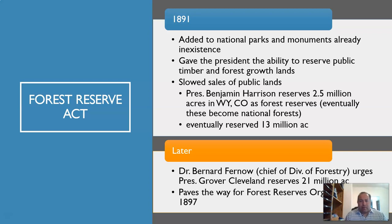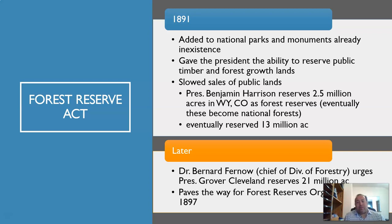The first law we'll focus on is the Forest Reserve Act of 1891. It added to national parks and monuments already in existence, gave the president the ability to reserve public timber and forest-growth lands, and slowed the sale of public lands. Benjamin Harrison was president at this time and reserved two and a half million acres in Wyoming and Colorado as forest reserves.